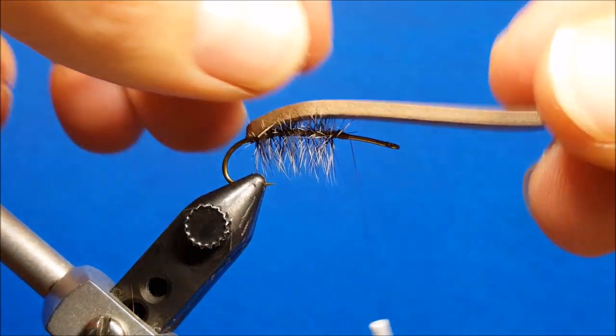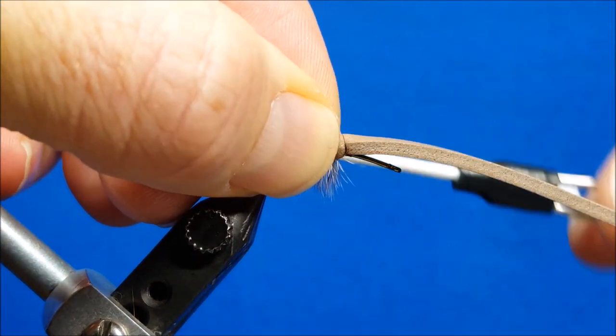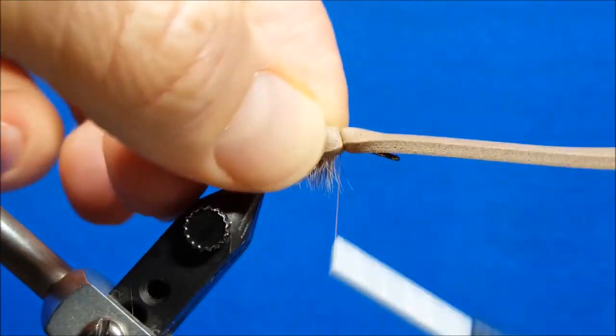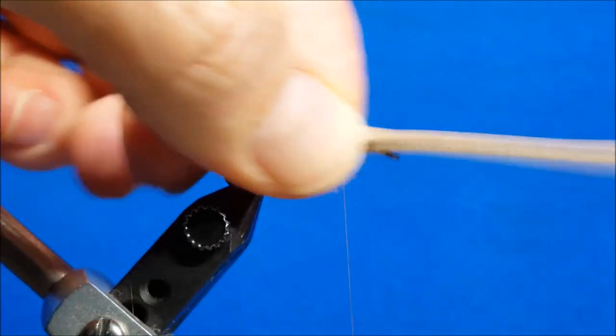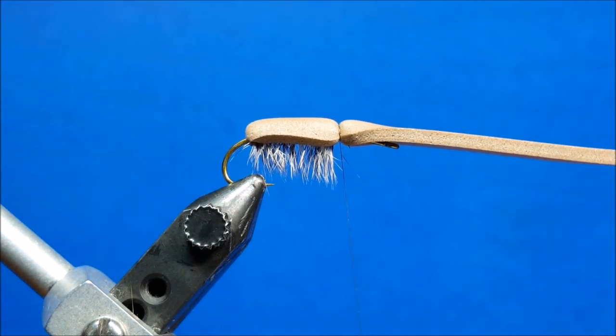Now I'm going to pull the foam forward. Once again, as I come over the top of this, I'm going to cinch and pinch at the same time. So a little cinch and pinch, cinch and pinch. I want to get down probably four or five good wraps here.